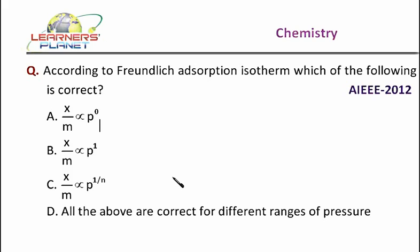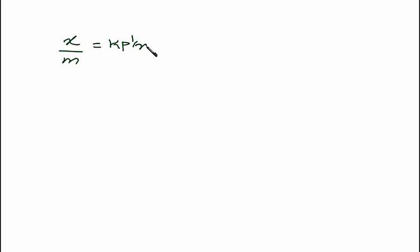Now let's check out how we are going to solve this. The Freundlich adsorption isotherm tells us that the variation of adsorption with pressure at a given temperature can be represented over a small range of pressure. The formula it states is: x by m is equal to k times p to the power 1 by n.